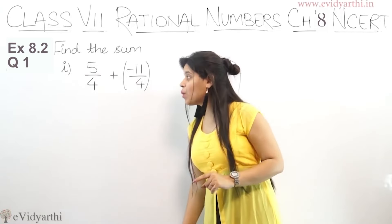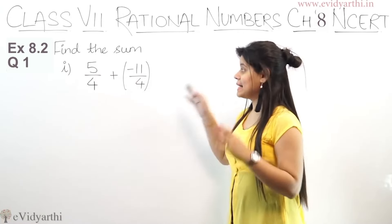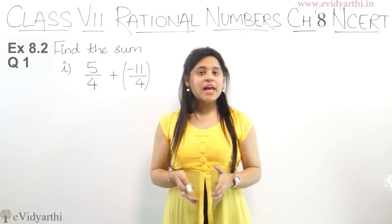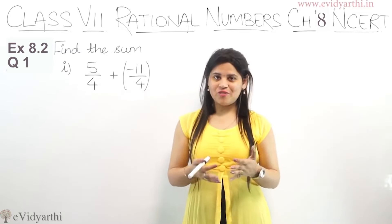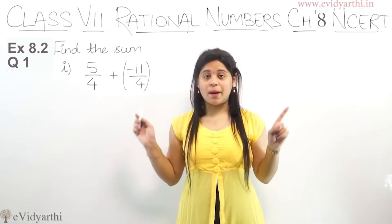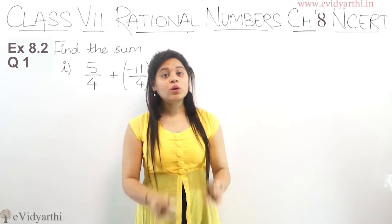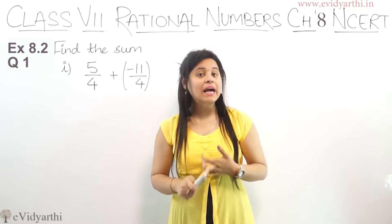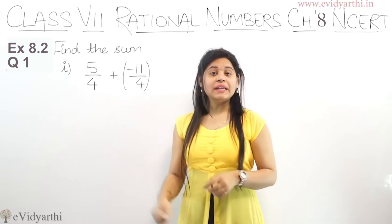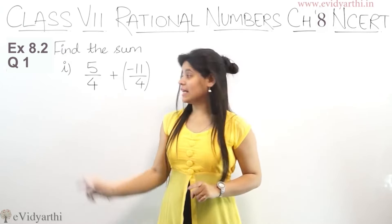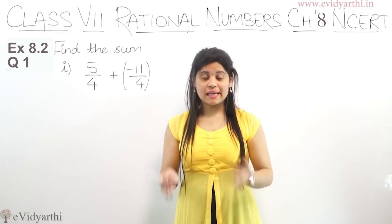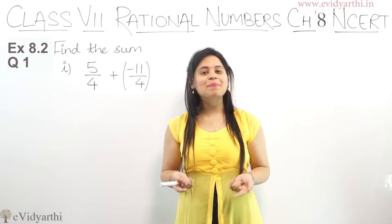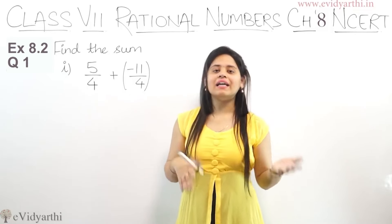The first part is 5 upon 4 plus minus 11 upon 4. You can see the rational numbers are in the form of fractions. When we add or subtract two numbers, the denominators need to be the same. Here the denominators are already the same, so if they weren't, we would make them the same first, then add or subtract.